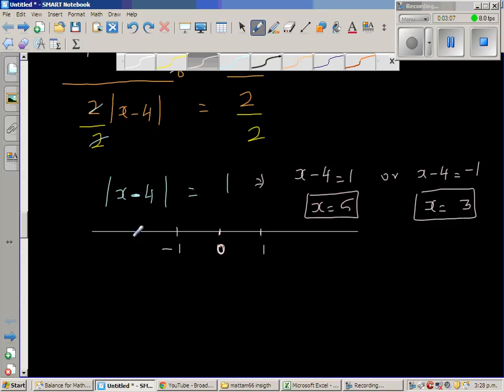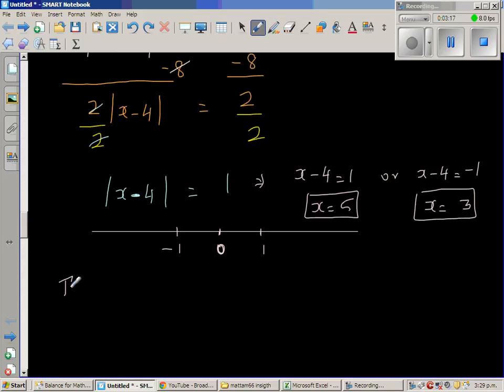You can also think this in a different way, like this. x minus 4 is equal to 1. So when you say x minus 4, I can say this means the distance of x, the distance of x from 4 is 1. Now you may wonder, how can you write like this? Suppose, let me take a very simple example.